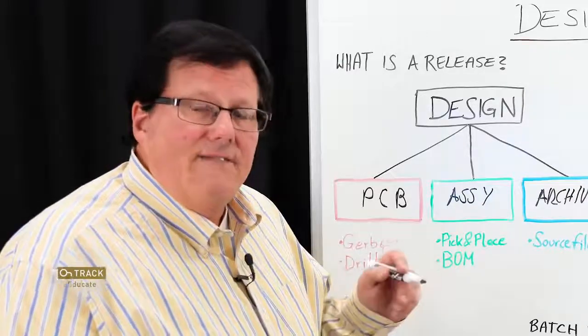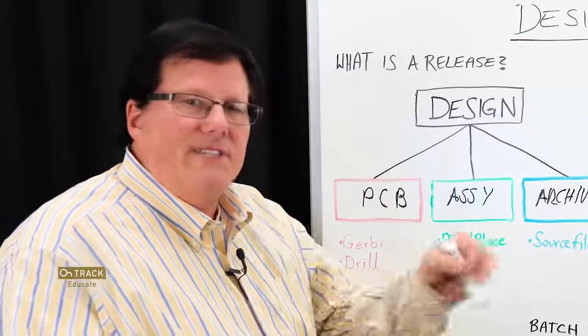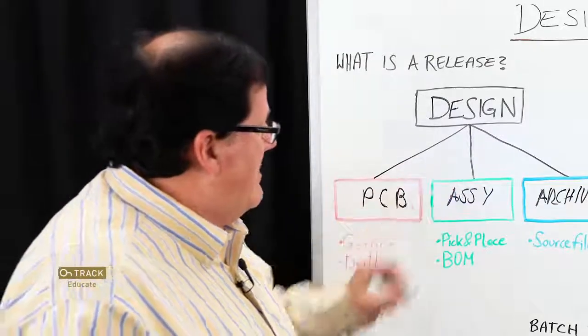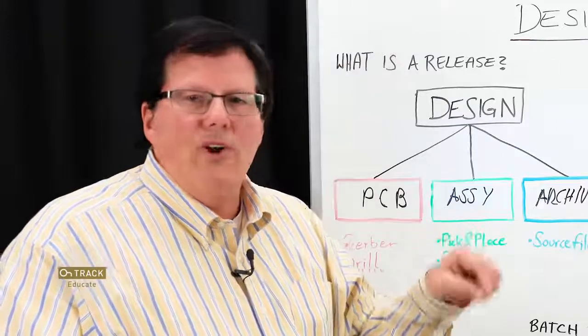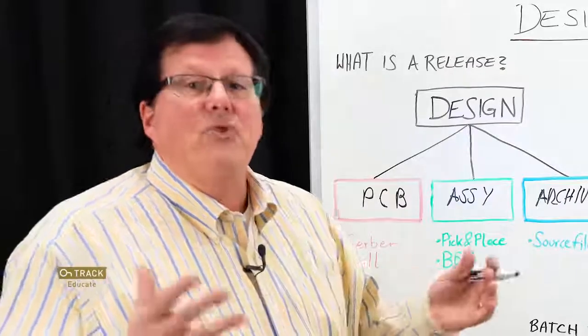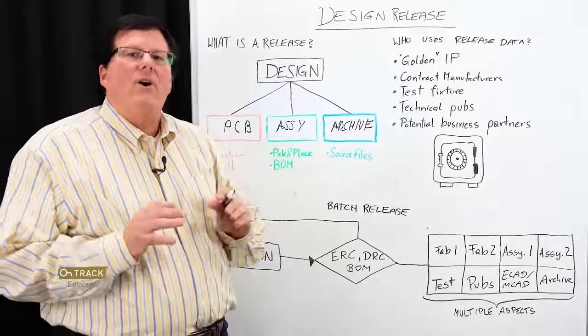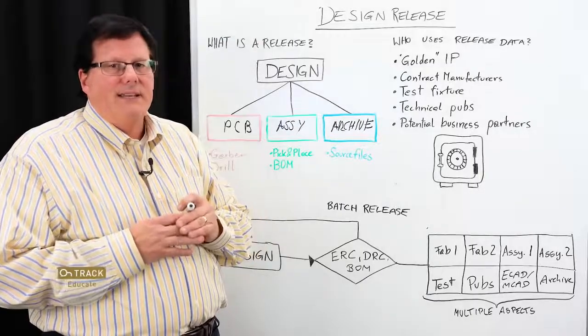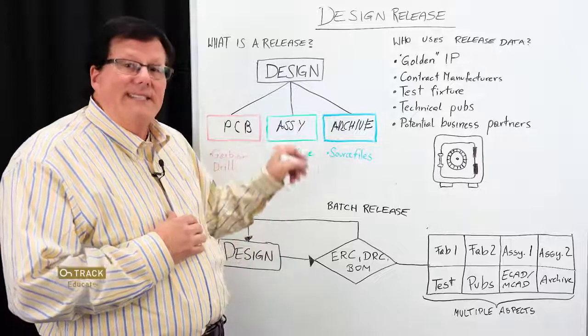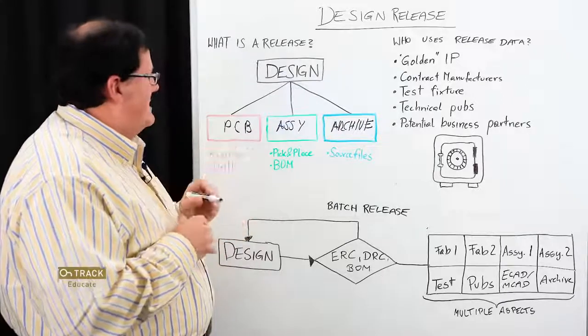A closely associated file for board fabrication is the drill file. The drill file is used to convey the position and diameters of the holes and any slots that are on the board. In assembly, we have pick and place files that designate where components go on the board. Closely related to that is the bill of materials. And in archiving, we're going to archive all types of data that relate to product release, such as not only the source files, but any ancillary documents, research, Excel spreadsheets, any of that type of data.